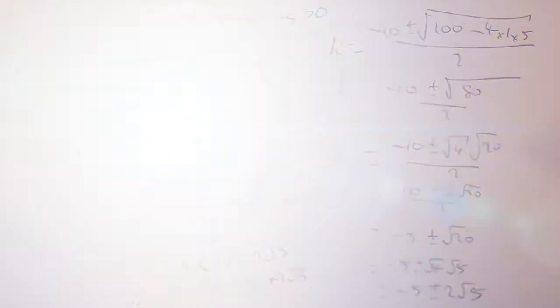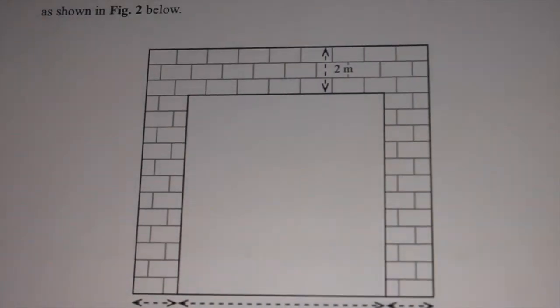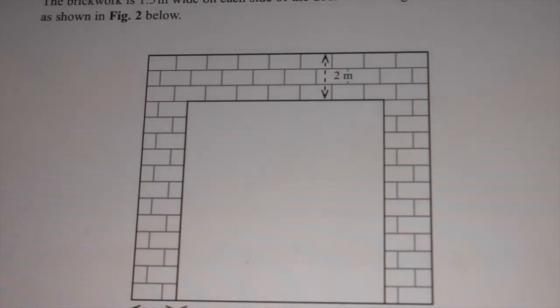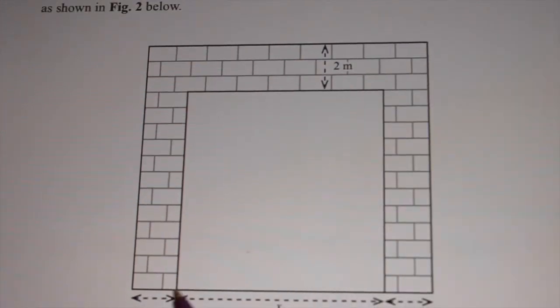I want to look at this from January 13, question 8. The square garage door of length X is surrounded on three sides by brickwork. The brickwork is 1.5 wide on each side of the door and 2 metres above the door. X, X plus 3 is the whole dimension there. And X in whole dimensions is X plus 2.